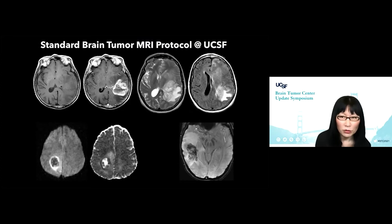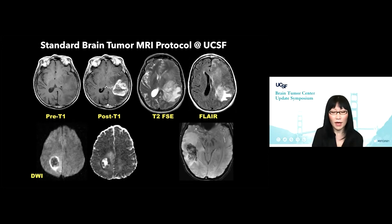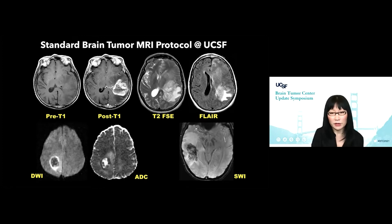Here's our standard brain tumor MRI protocol at UCSF. We always do pre-contrast T1 followed by post-contrast T1, T2, FLAIR, DWI, and ADC map, and susceptibility weighted imaging. These are what I consider the bread and butter. If you're doing a brain tumor protocol without these five or six sequences, you will be missing an important diagnosis.